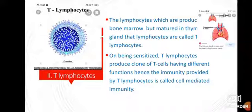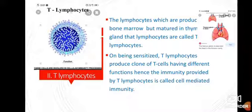B lymphocytes provide immunity called antibody-mediated immunity or humoral immunity. T lymphocytes provide immunity called cell-mediated immunity. These are the two types of lymphocytes — B lymphocytes and T lymphocytes — and their mechanisms and functions are different from each other. Their detailed mechanism against antigens will be studied in the next lecture.